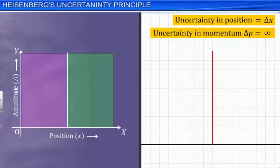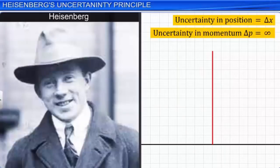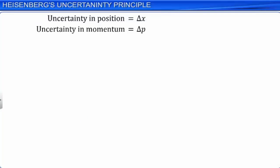This is the essence of Heisenberg's uncertainty principle. Heisenberg's uncertainty principle states that it is not possible to simultaneously measure the position and the momentum of a particle exactly. If delta x and delta p represent the uncertainty in the position and momentum of a particle, then according to the uncertainty principle, delta x · delta p ≥ ℏ/2. Since ℏ = h/2π, we have delta x · delta p ≥ h/4π, where h is the Planck's constant — let this be equation 1.